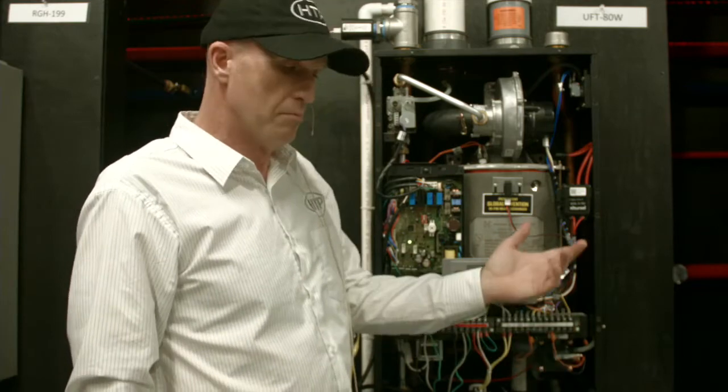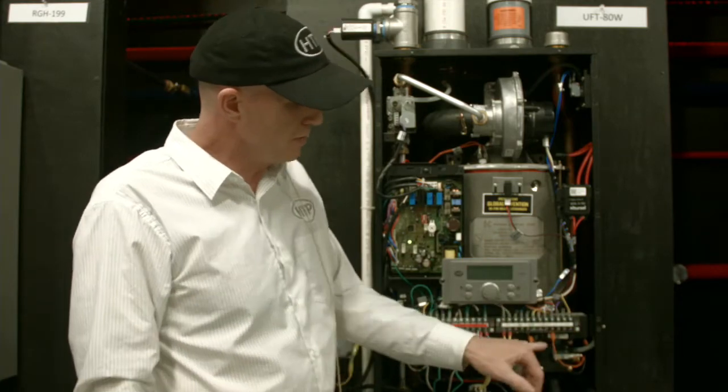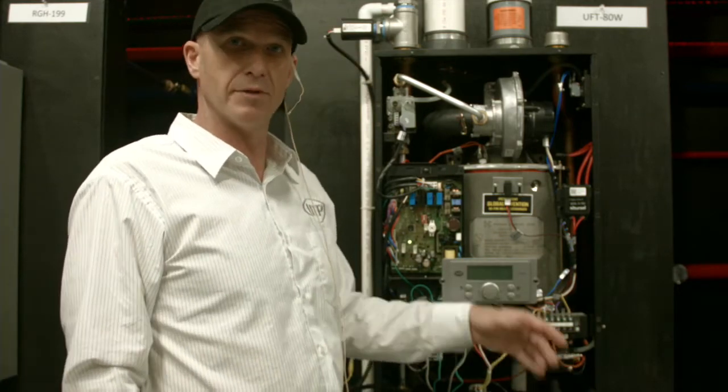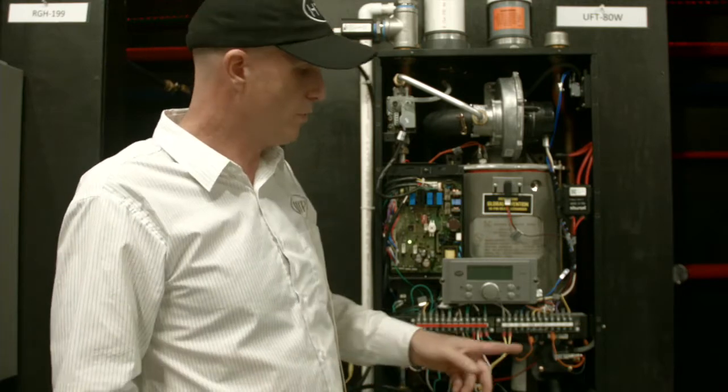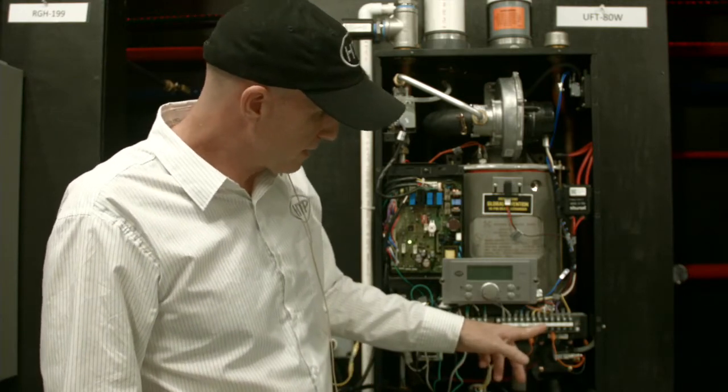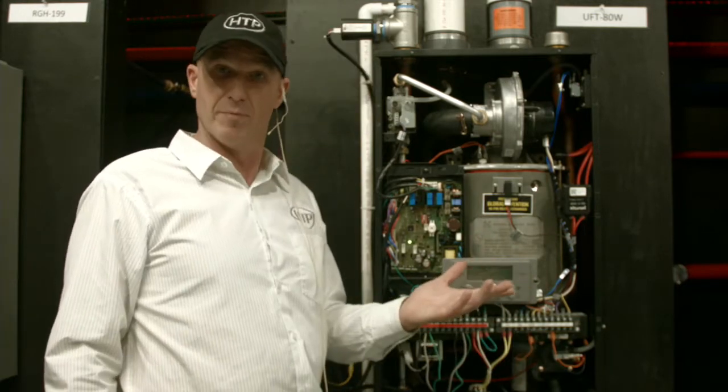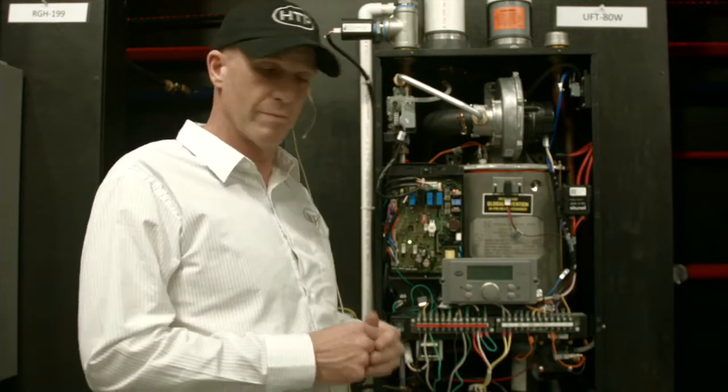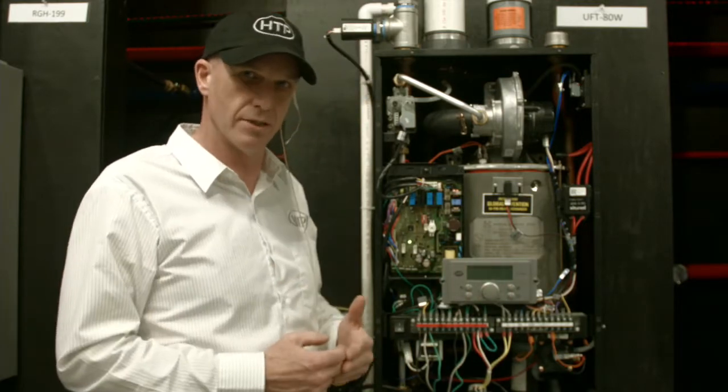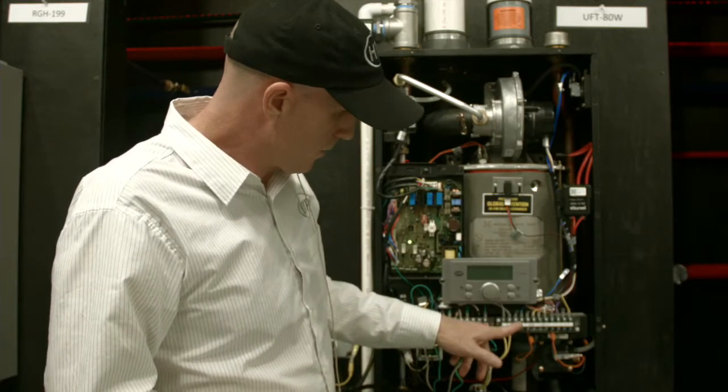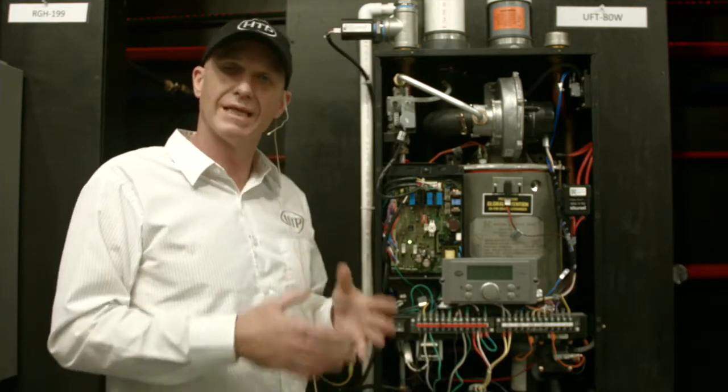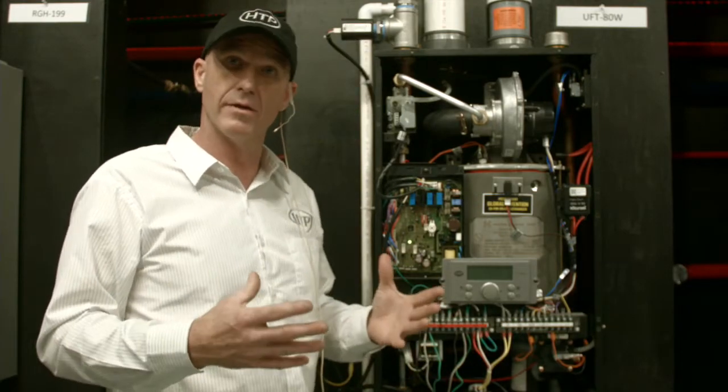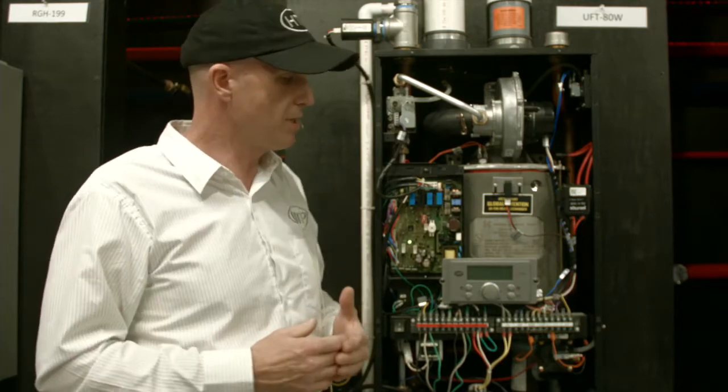We have our outdoor sensor that allows you to connect an outdoor sensor directly to the unit. Our thermostat input that would take a thermostat call or an end switch from a relay board. We have a direct zero to 10-volt input from a system. So if we have a building management system, we can send it a direct zero to 10-volt signal to it. It also has a place to put a system sensor. We can cascade, meaning we can put multiple units together, so it gives you a place to put the system sensor.